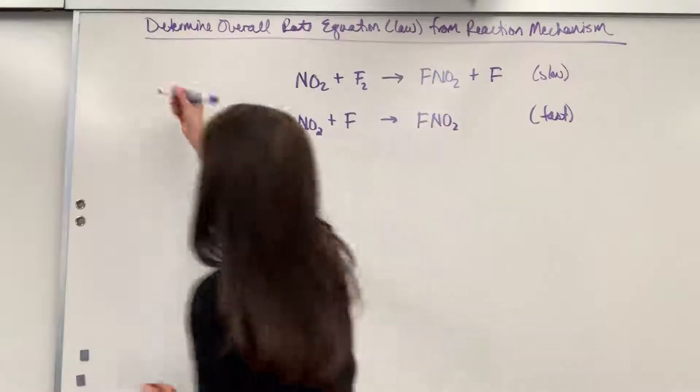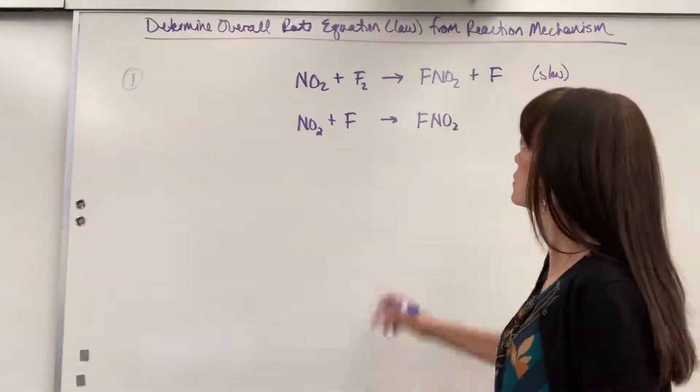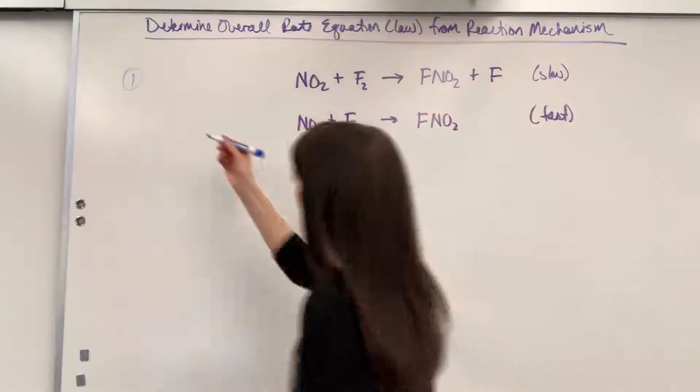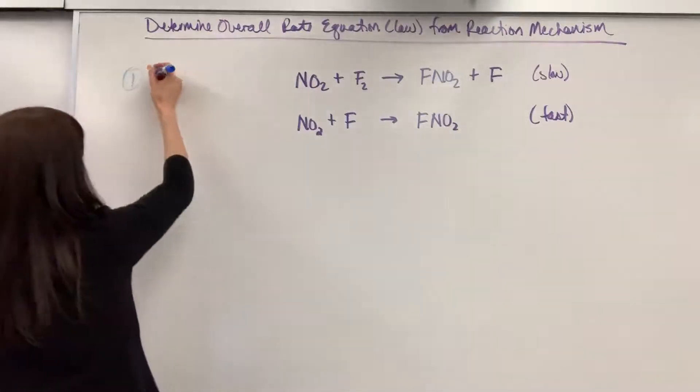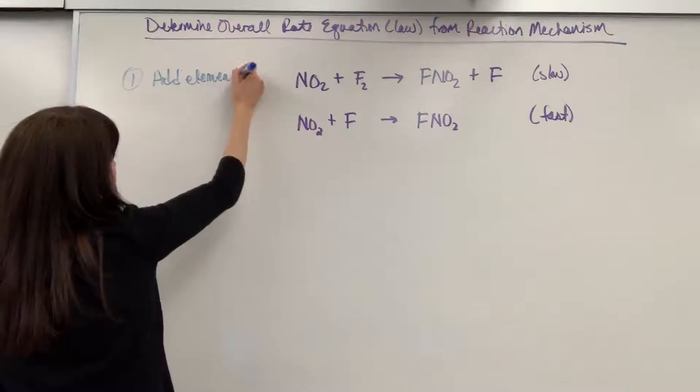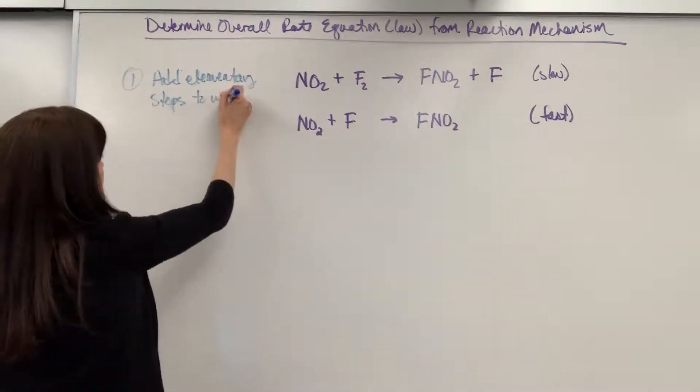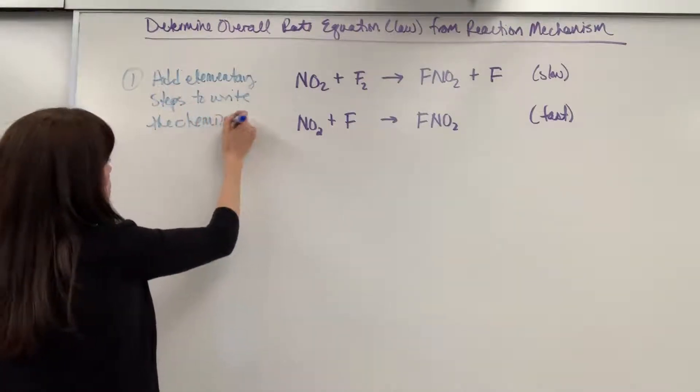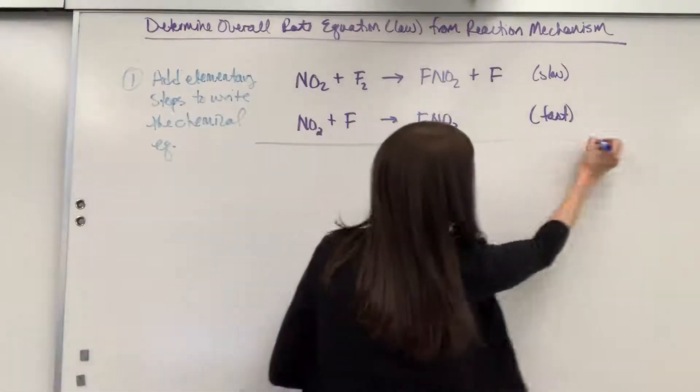First thing I do, I'm going to make a little recipe list over here of the steps you need to follow. First, I add the elementary steps together to get the overall—not rate equation, sorry—chemical equation. So add the elementary steps to write the chemical equation. Let's go ahead and do that.